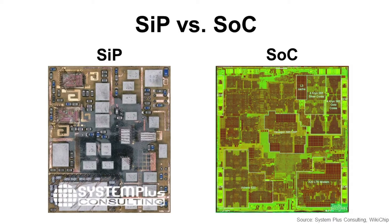It is a good approach to compare SIP with SOC to explain better. As you can see, SIP integrates a lot of packages, dies, and passive components, but SOC integrates every function into one die. SOC can maximize function within a small area, but it takes a lot of time to develop — more than two years. It also has limitations in integrating different technologies, different devices, and different process generations. That is the big reason people are starting to use SIP more.